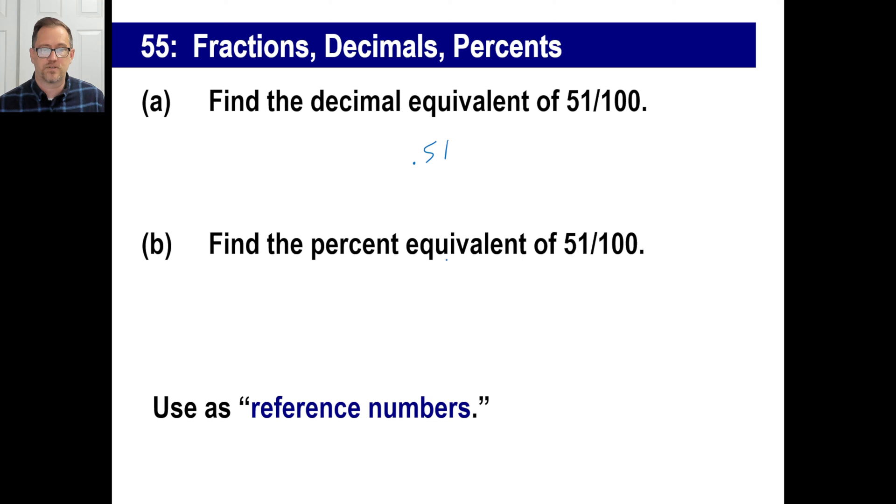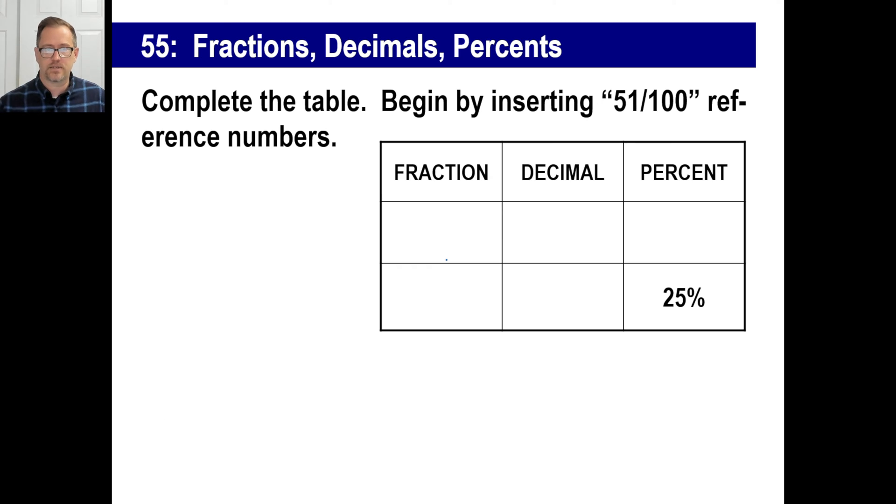And let's actually do this. Let's complete this table. Begin by inserting 51/100 reference numbers. So let's go fraction, decimal, percent. Well, a fraction is going to be 51/100. A decimal is 0.51. And a percent is 51%.